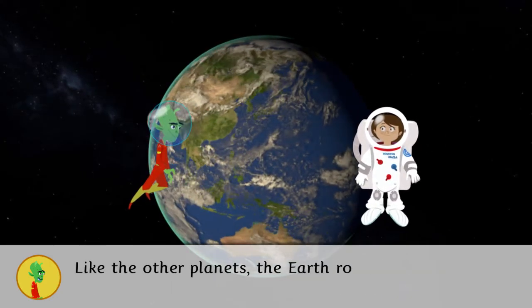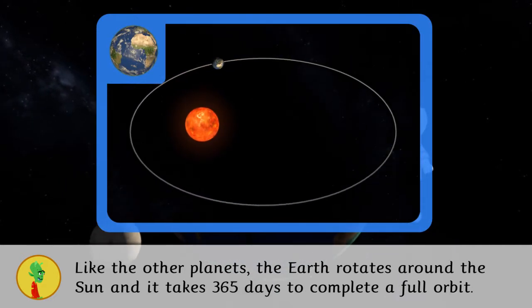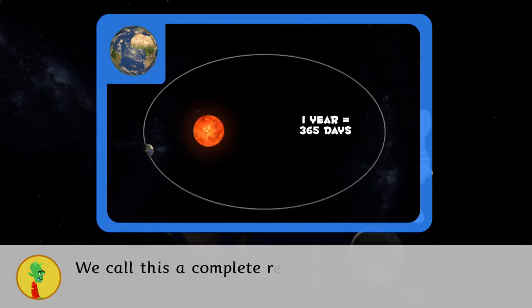Like the other planets, the Earth rotates around the Sun and it takes 365 days to complete a full orbit. We call this a complete revolution.